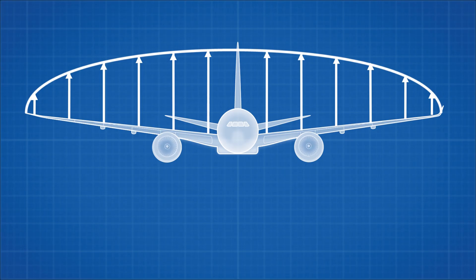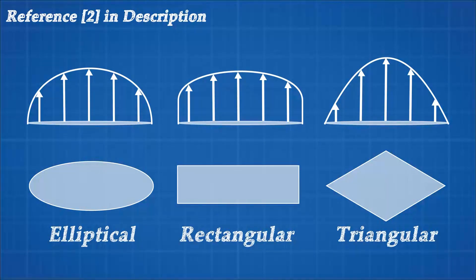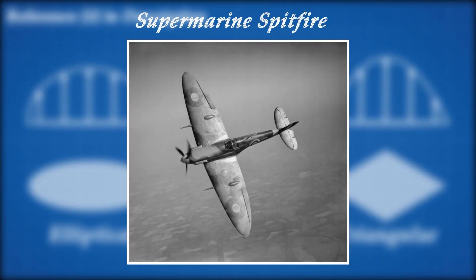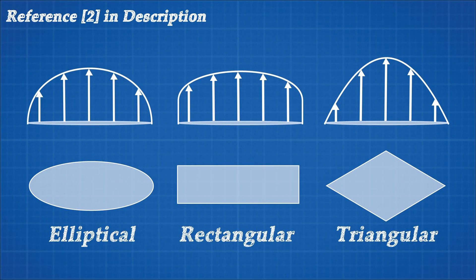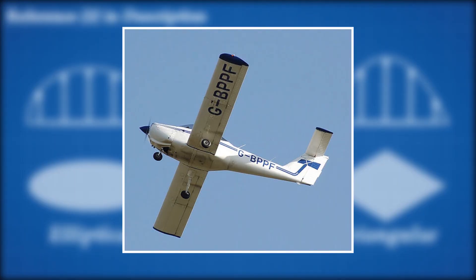Let's compare some wing shapes and their lift distributions to see how this works. Here are three wing shapes: an elliptical, rectangular, and triangular wing, and their lift distributions look like this. The elliptical wing also has an elliptical lift distribution, and this is the ideal. The iconic Spitfire was one of the few mass produced planes in history to have this shape, as it is difficult and expensive to manufacture. The rectangular wing's lift distribution is quite high at the edges, leading to high levels of induced drag, but this is the easiest shape of wing to manufacture and is mostly used in smaller, cheaper aircraft.